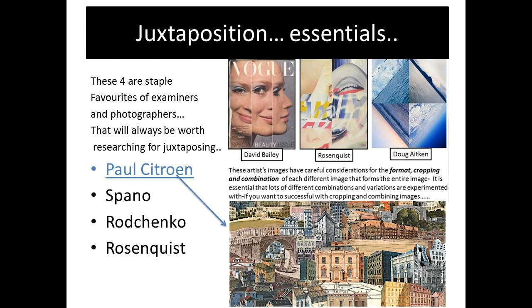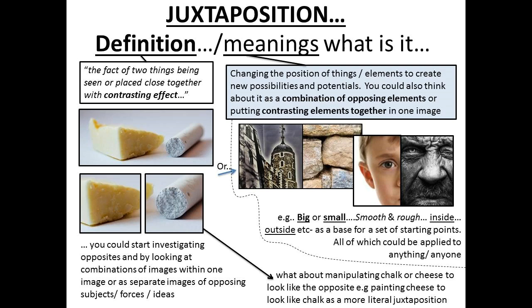This slide is just making sure that you think about the definition and the meaning behind what juxtaposition is. In the case of photography, it's very similar to the original meaning, which is the fact of two things being seen or placed closely together to create a contrasting effect. Hence why I put chalk and cheese on there — combining things that are big or small, texture-wise, or old and new, rough and smooth. That's a great way to start off and it could be done quite simply and achievably.